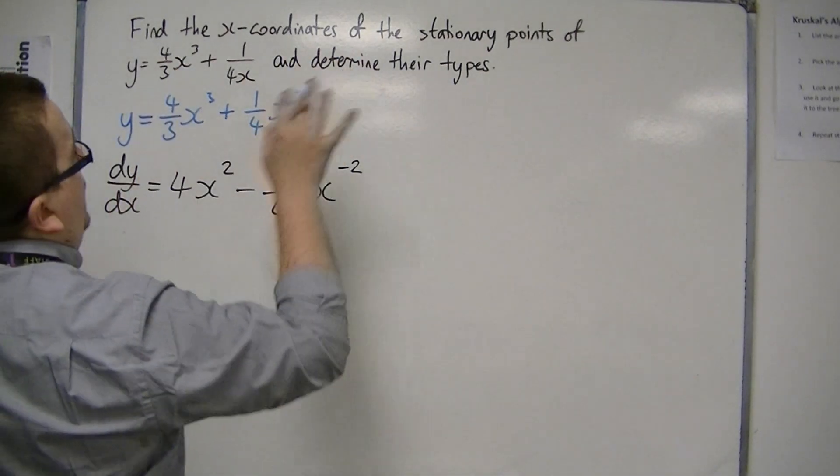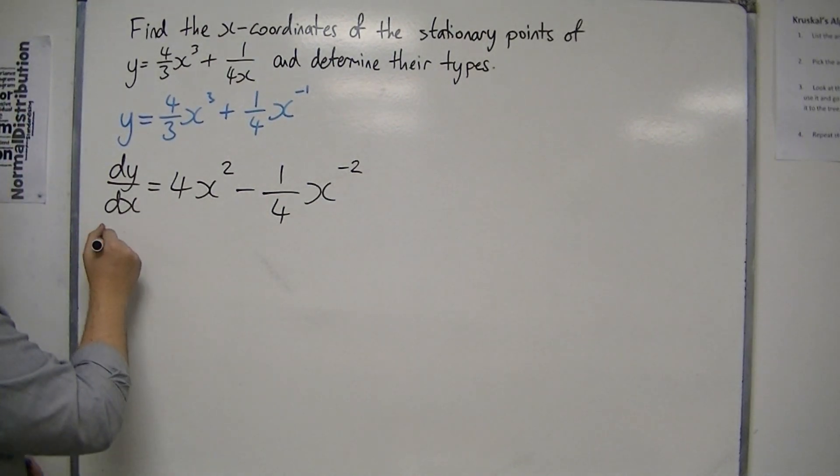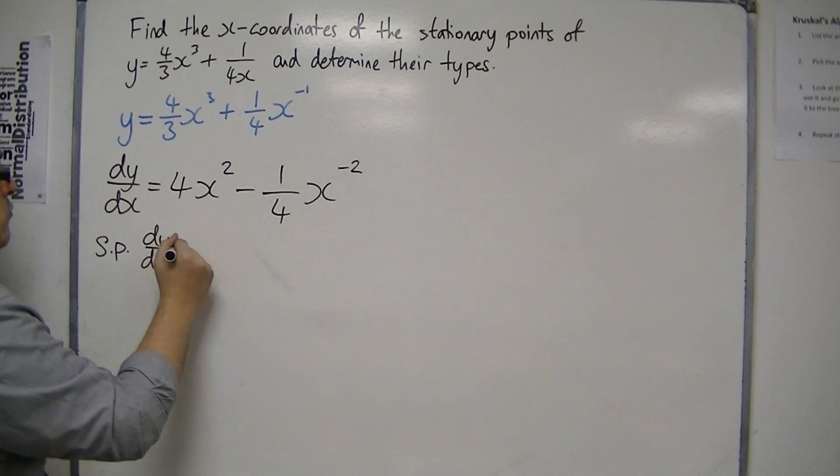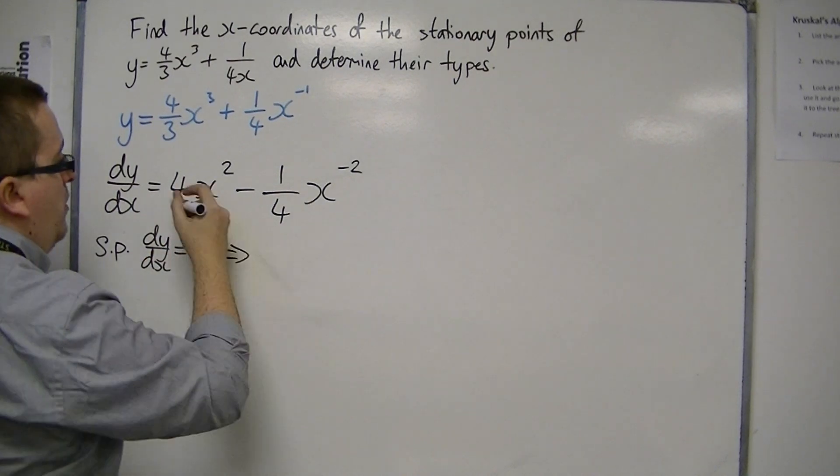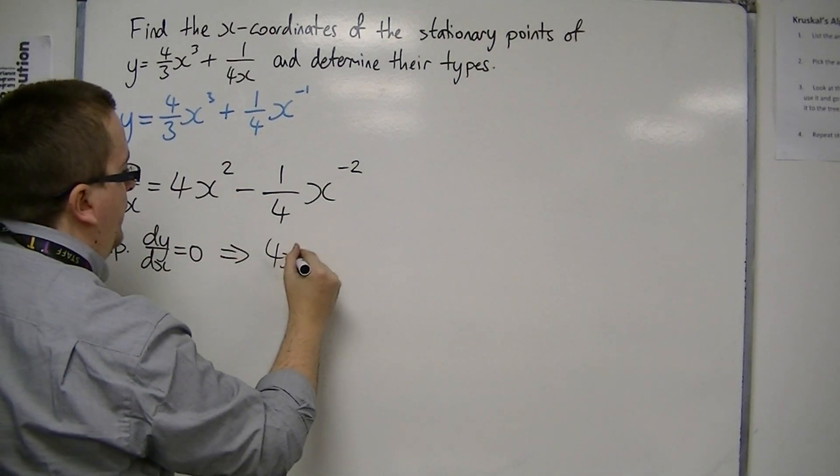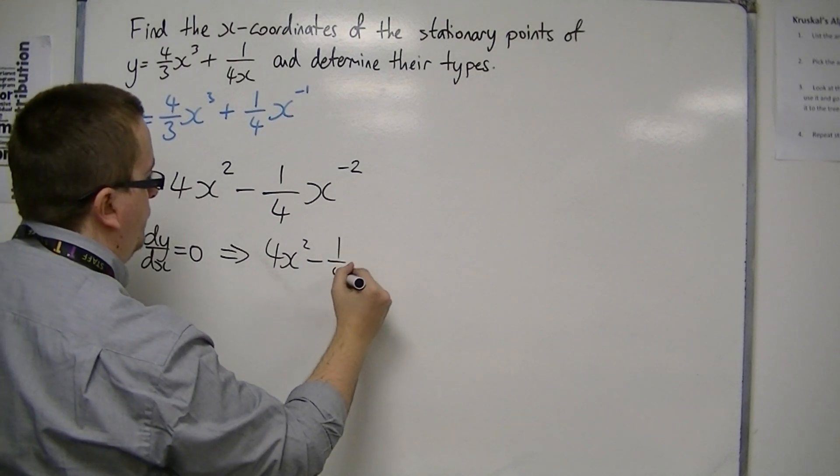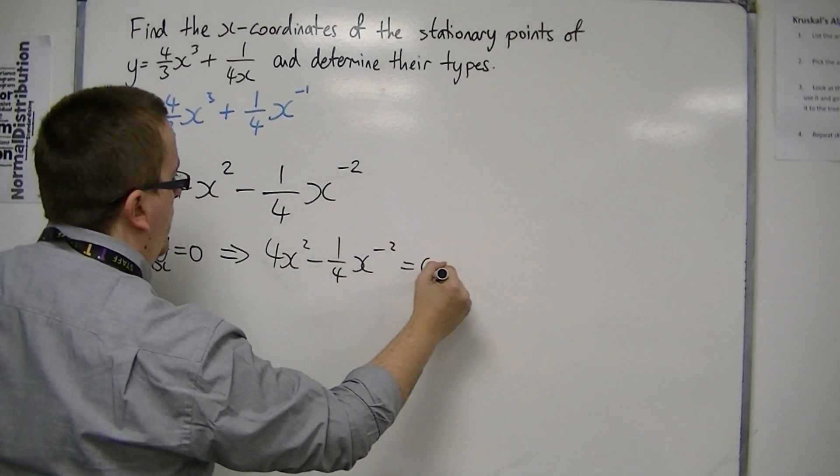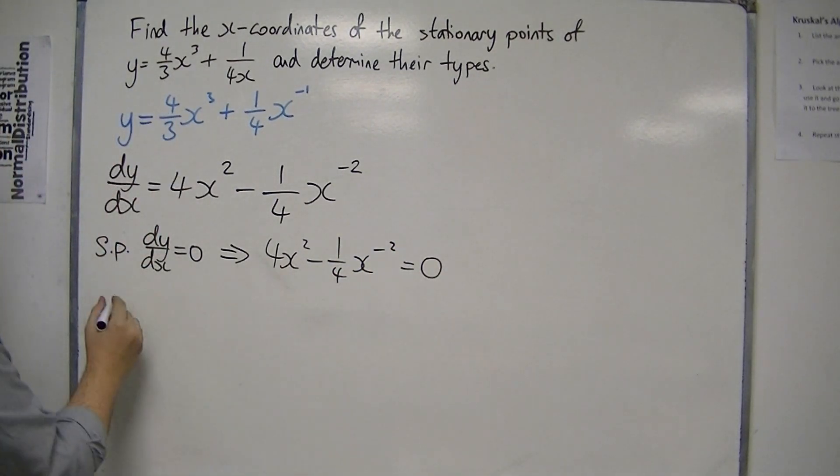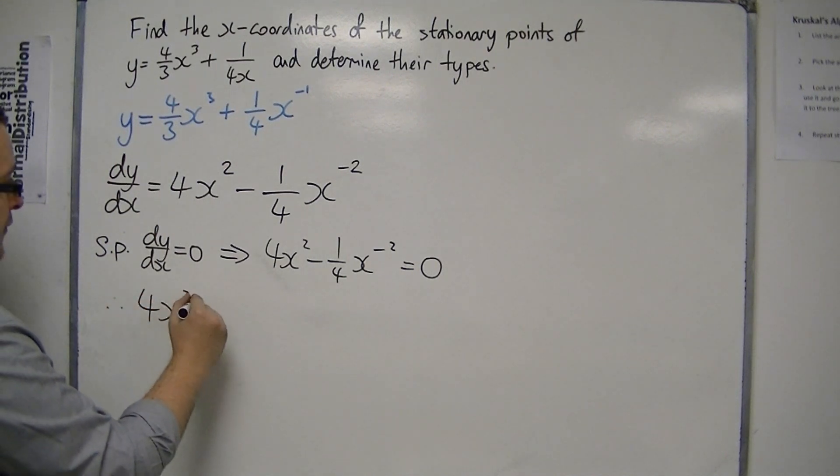I'm then asked to find the stationary points. So stationary points exist when dy/dx equals 0, and so I must put this equal to 0 and solve the equation. So I'm going to add 1/4 x⁻² to both sides to start off with.